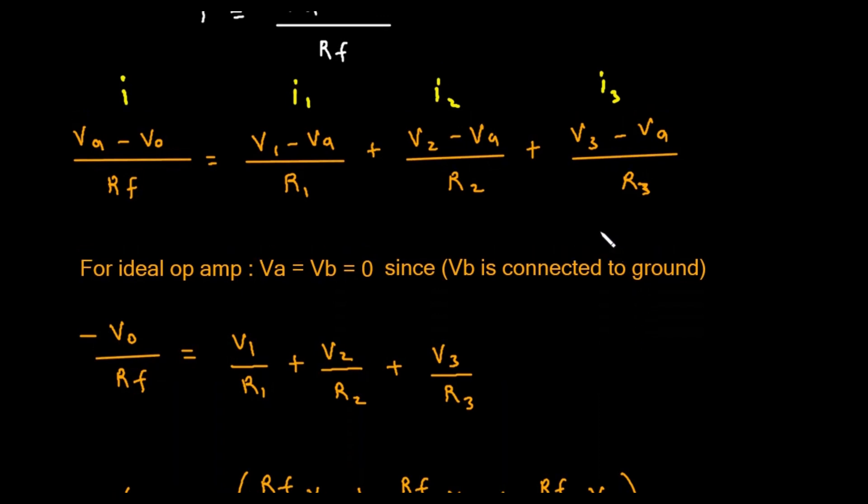This equation looks very complex. But here is where the special properties of the op-amp make everything incredibly simple. To analyze this circuit, we assume we are using an ideal op-amp. An ideal op-amp has two golden rules.